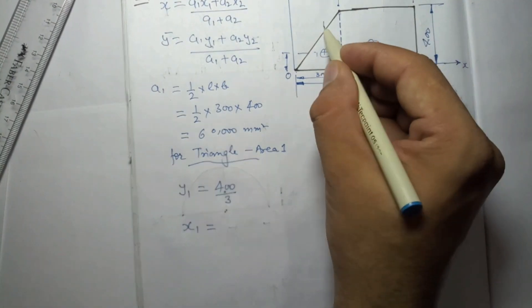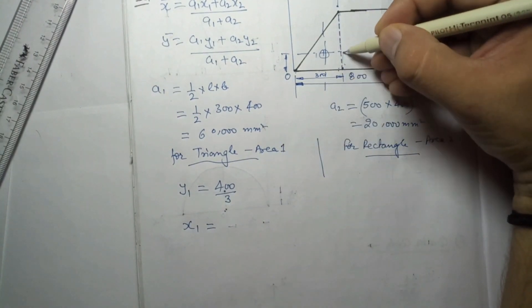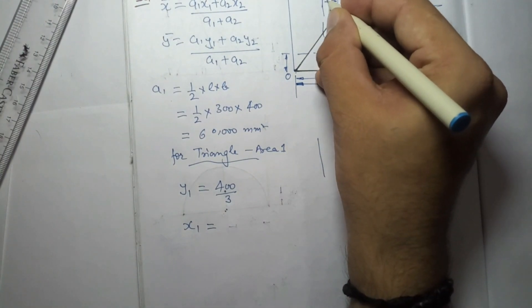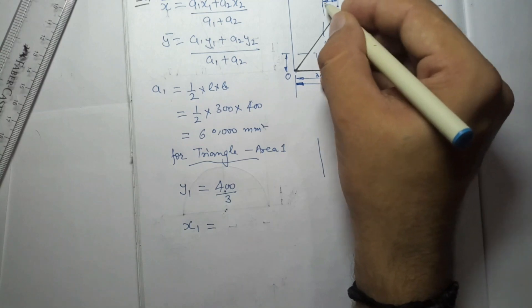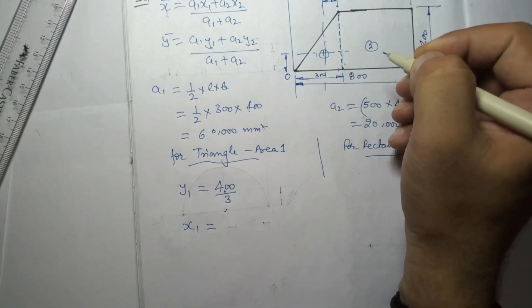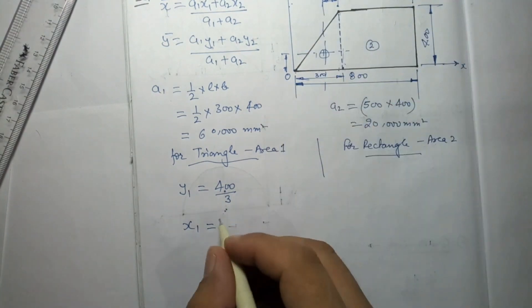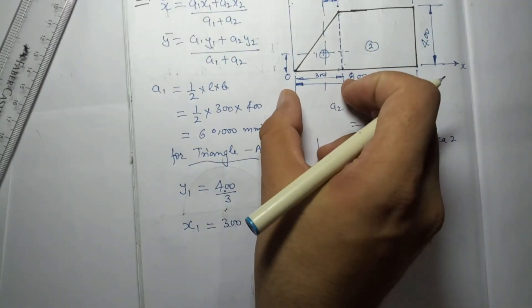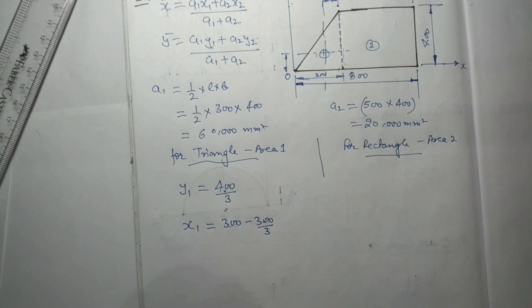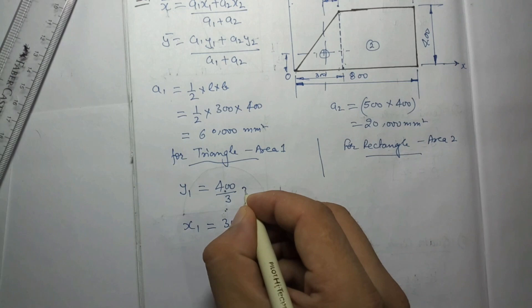Now what will be x1? It will lie somewhere here. If you take this as base, we have this formula, so I will write in this form. This will be b/3. If this is 300, it will be 300/3, but we need this value. We have total, so we can say 300 minus 300/3. That is equal to 200 mm.